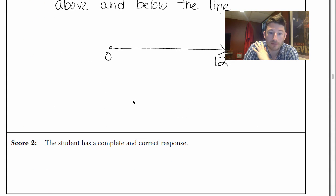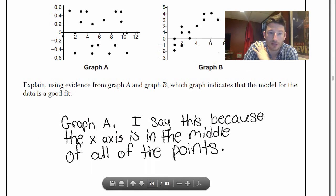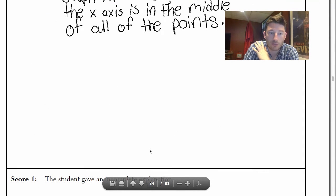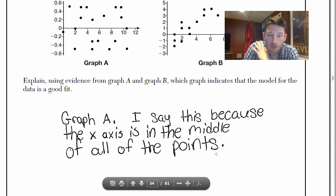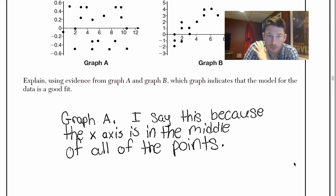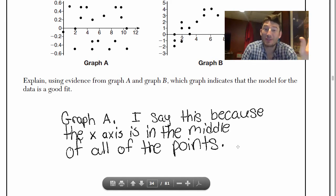Which we talked about, the points are interspersed or grouped kind of evenly on both sides. Has random points scattered above and below the line. This person got a complete and correct response. Alright, let's look at someone who got a 1. Graph A, I say this because the x-axis is in the middle of all of the points.